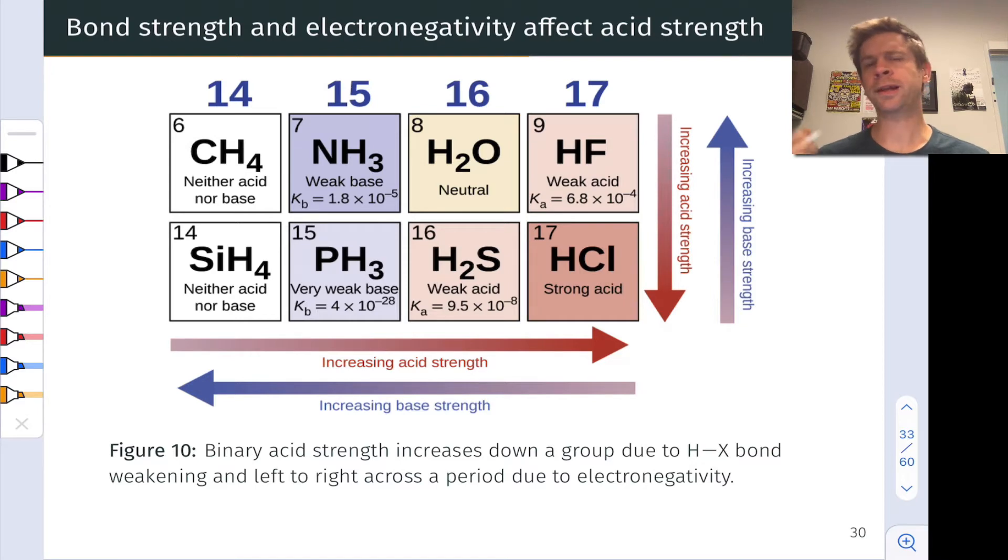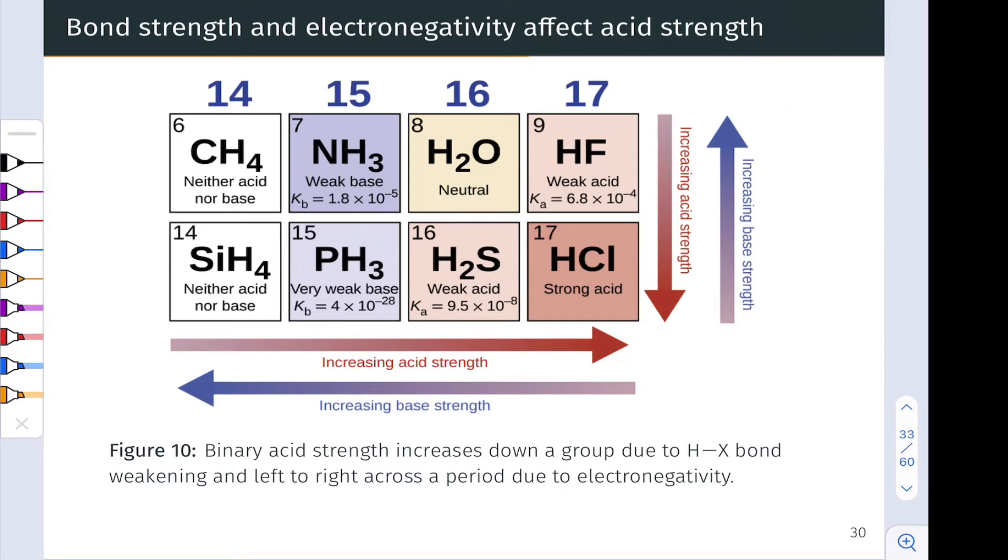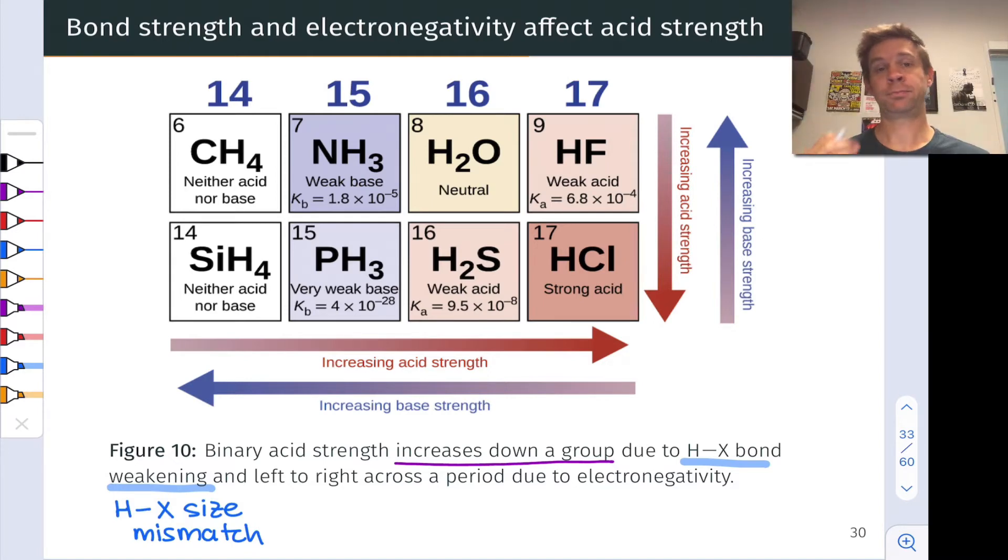So why is this? Well, let's focus in on the acidity of compounds like H2S versus H2O, or HCl versus HF. Binary acid strength increases down a group for the reason of the HX bond strength. The HX bond gets weaker as we move down a group because the X atom gets larger. And the size mismatch between hydrogen and the X atom, when X is relatively large, causes a weaker HX bond. This makes dissociation of the acid into H plus or H3O plus and X minus more thermodynamically favorable when that HX bond in the intact acid is weaker.